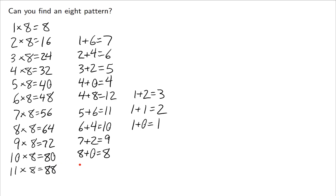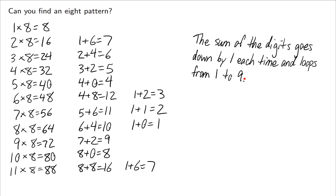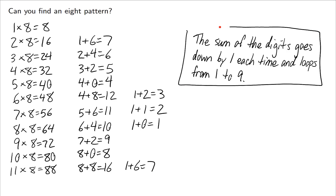11 times 8 is 88. 8 plus 8 is 16, and then 1 plus 6 is 7. So yes, the pattern re-establishes itself: when it goes from 1, it jumps to 9 and then continues to go down. The sum of the digits goes down by 1 each time and loops from 1 to 9. That's the 8 pattern.